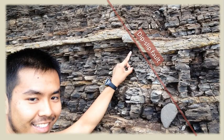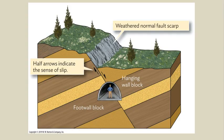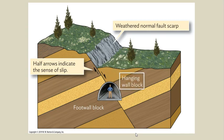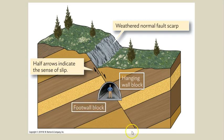Here's a photograph pointing out a small dip-slip fault. When naming vertical faults as either normal or reverse, the hanging wall and footwall sides of the fault must be considered. The hanging wall block is the block of rock resting on top of the fault plane, or the upper half of the fault. The footwall block is situated below the fault plane. Movement of the hanging wall either up or down will expose the fault surface, making a fault scarp.